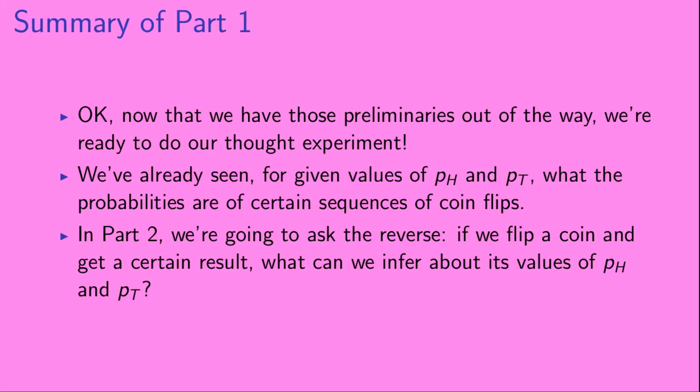Okay, so now that we have those preliminaries out of the way, we're ready to do our thought experiment. We've already seen for given values of pH and PT what the probabilities are of certain sequences of coin flips. In part two, we're going to ask the reverse. If we flip a coin and get a certain result, what can we infer about its values of pH and PT?